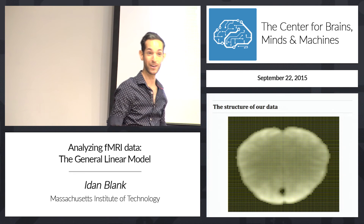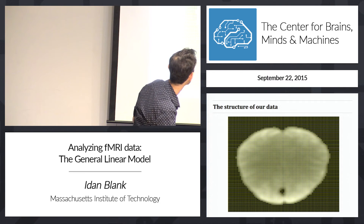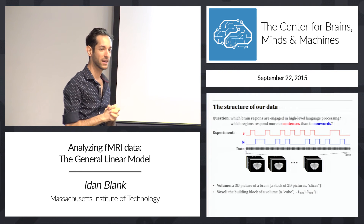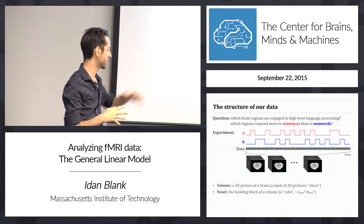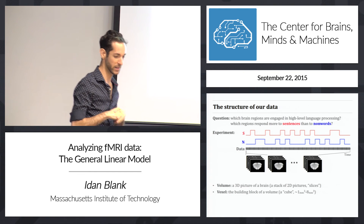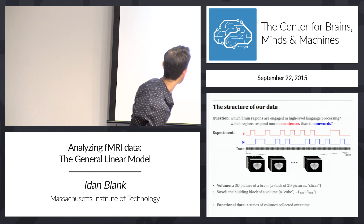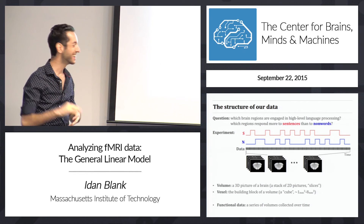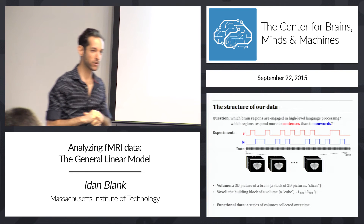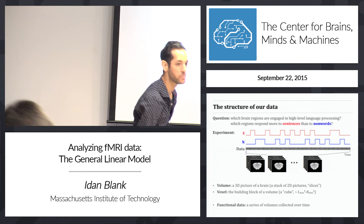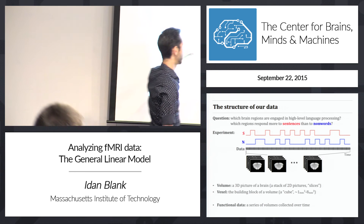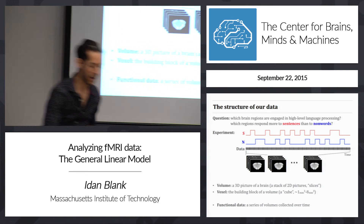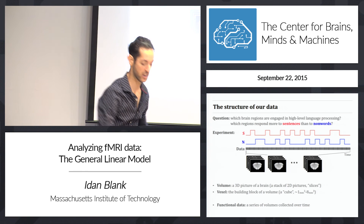A voxel is the building block of a volume — a cube, usually between 1 and 8 cubic millimeters in size. Our functional data is a series of volumes collected over time, like a 3D movie showing how brain signals change. We also get anatomical data for each subject: one detailed 3D picture of the brain just to see its structure, which helps during some processing stages.